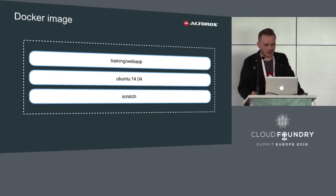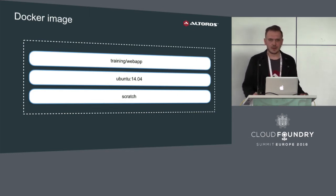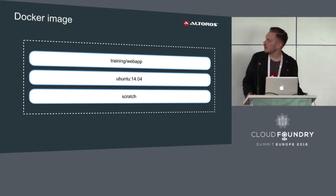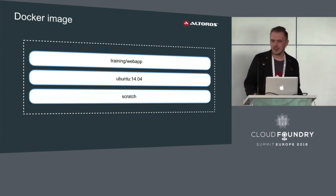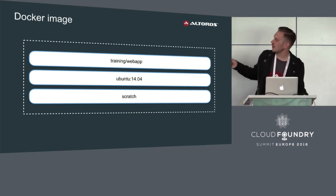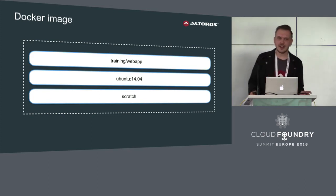About Docker images: Docker images themselves consist of layers, each containing a difference applied on top of the previous layer. Many of you have probably seen Dockerfiles — for example, FROM ubuntu:latest or FROM ubuntu:14.04, with a couple of commands to install some software. These commands create new layers.